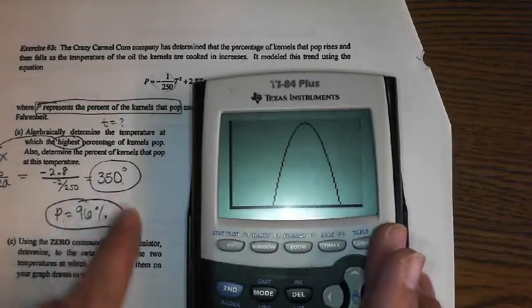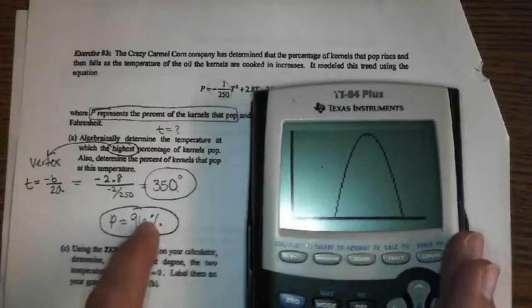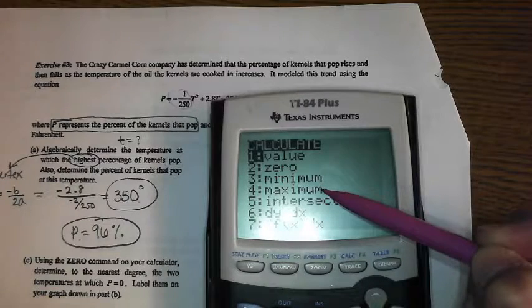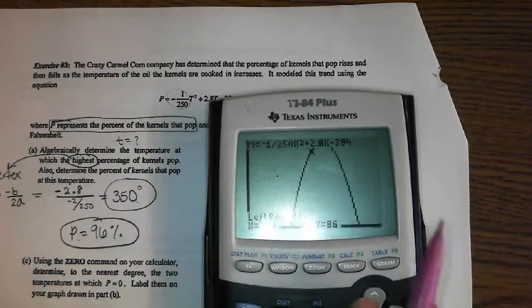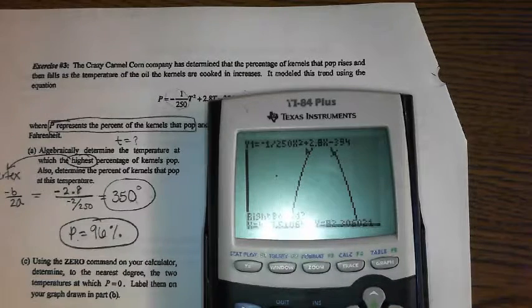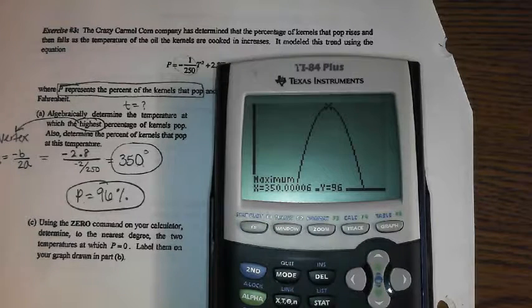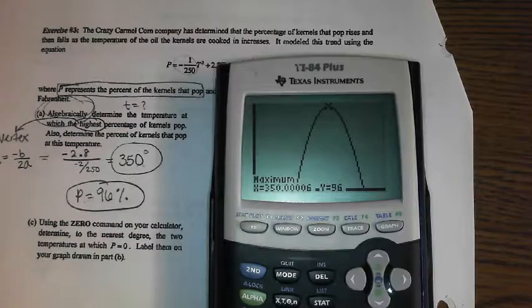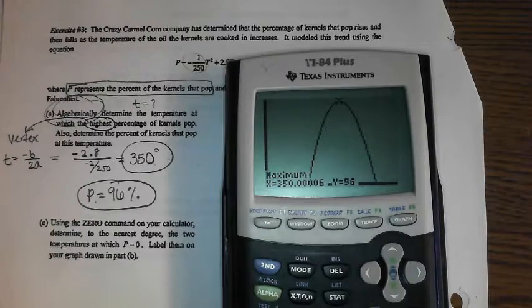So, I just found my vertex by hand. Negative B over 2A, got my answer for my X coordinate, plugged it back in, got the Y. I could second trace this, right? Second trace, and I'd be looking for the maximum, and it's going to give me the same point. Maximum, left bound, enter, right bound. We scroll all the way over to the right of it. There's my cursor, enter, enter, and this is what we just got. 350, 96. We just did it by hand. And we had to do it by hand, because they said algebraically. So, it's a little formula you have to memorize, which is why I just put it on a flash card. Does that make sense? Okay.